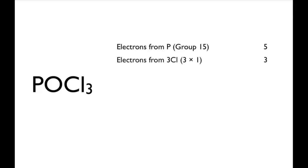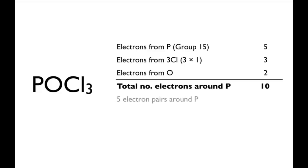There are three chlorine atoms, each donating one electron to form a single bond, and an oxygen atom that donates two electrons to form a double bond. This gives a total of ten electrons around the phosphorus atom of five electron pairs.